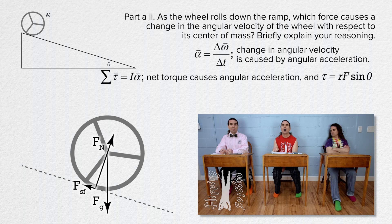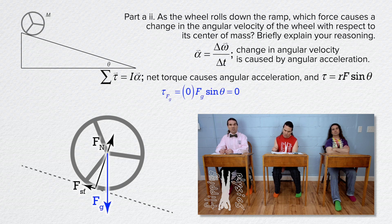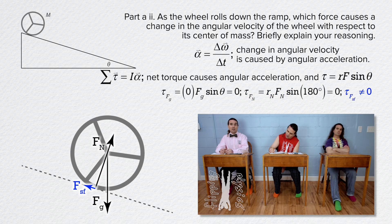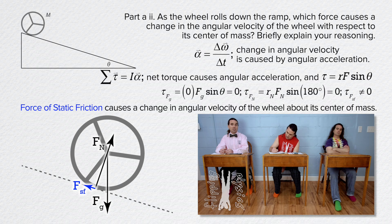Torque equals r times F times sine theta, where r is the vector from the axis of rotation to the location of the force, F is the force, and theta is the angle between r and F. The r value for gravity is zero, so gravity causes no torque about the center of mass. The angle for the normal force is 180 degrees and sine of 180 degrees equals zero, so the normal force also causes zero torque. Therefore, the only force causing a torque about the center of mass is the static friction force, which causes the change in angular velocity.